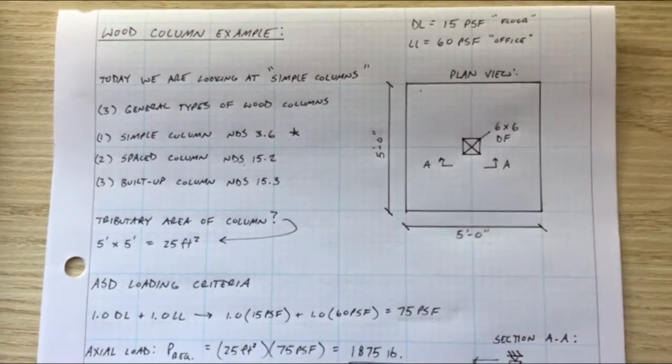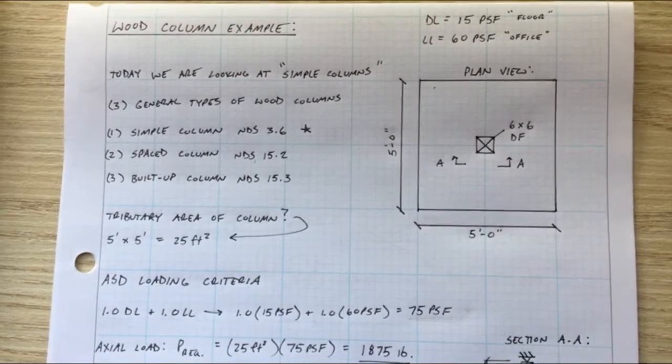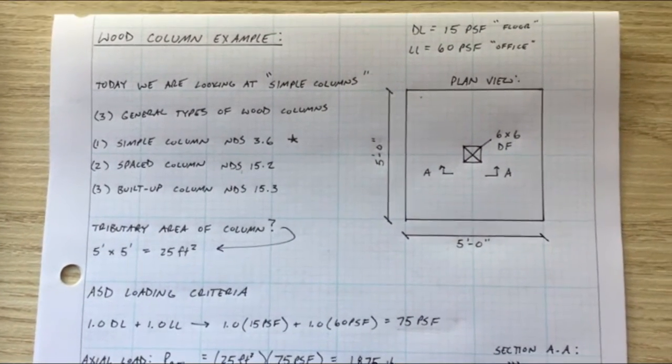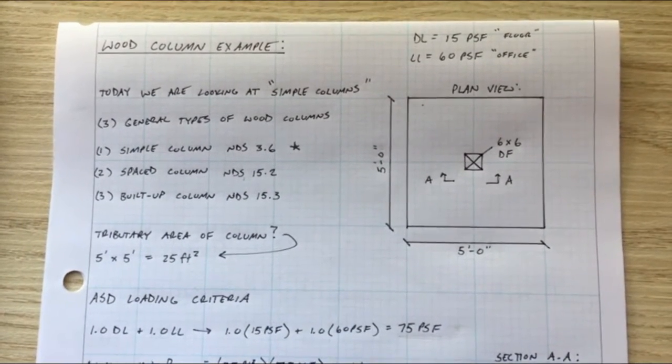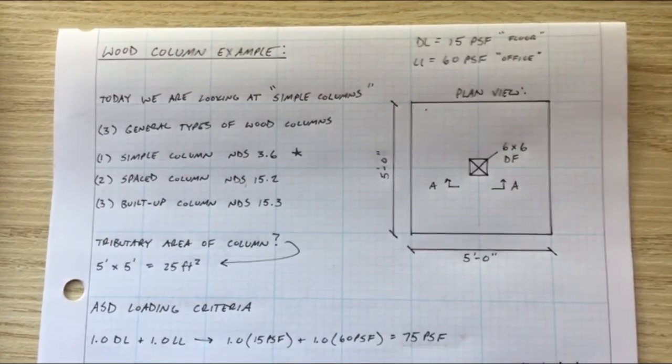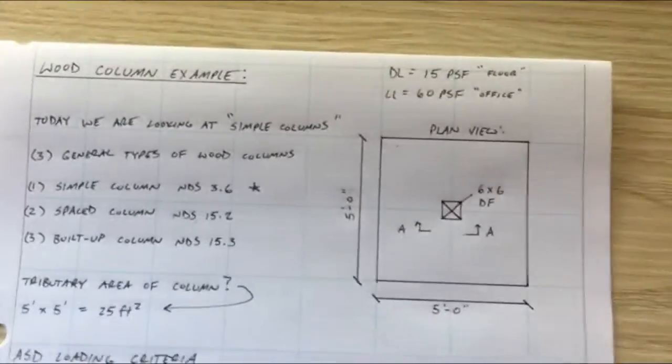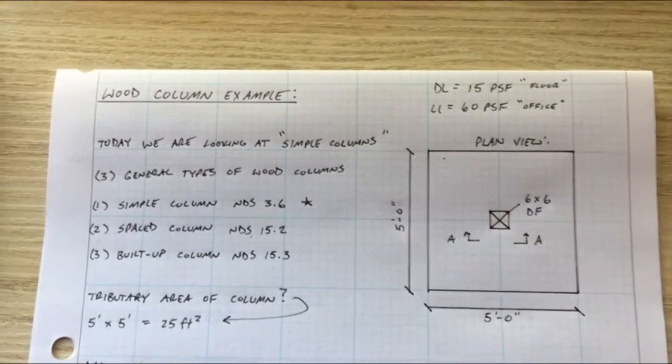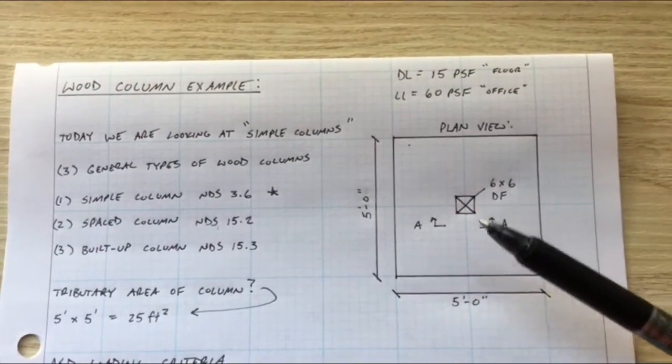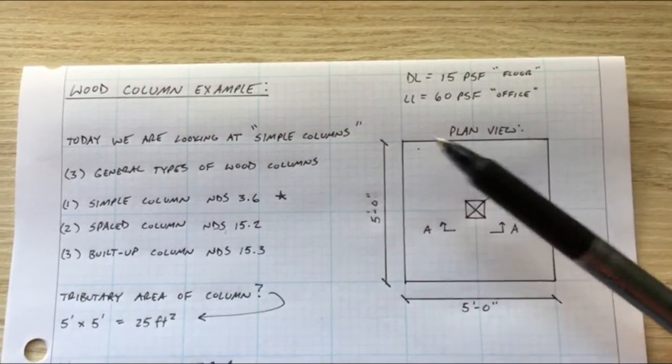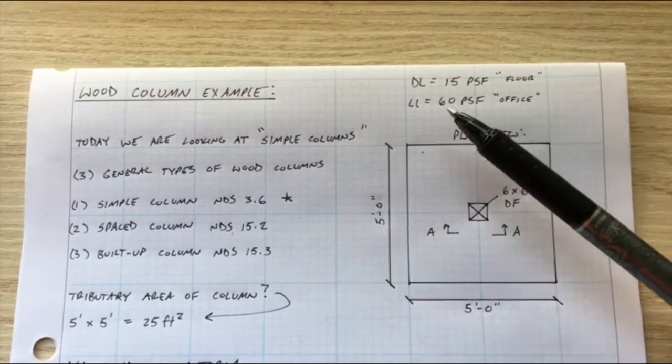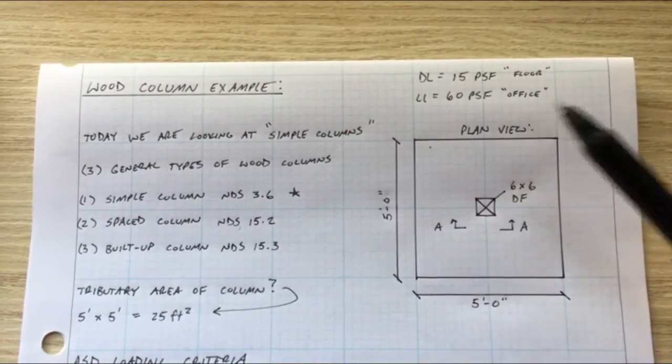All right let's jump into it today. We have another request by a subscriber, Osman, who asked if we could do, piggybacking off of the wood beam example that we had done a while back, an example of a wood column. So Osman, this is for you. Today, wood column example. What we have first is some loading criteria as well as tributary area defined for this column. We have a six by six Doug Fir column and it's picking up in plan view a tributary area of five feet by five feet. It's supporting a dead load of 15 PSF for the floor load and then for the live load 60 PSF, and that is an office loading.